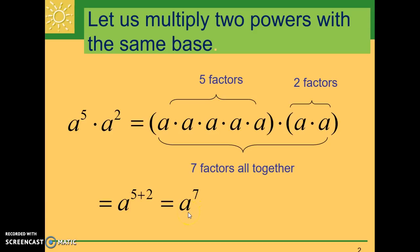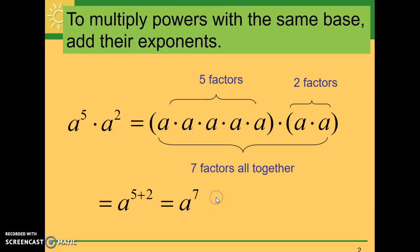A quicker way to get that is to just look at the exponents, add them up, and we have the final answer. So to multiply powers with the same base, we simply add their exponents.